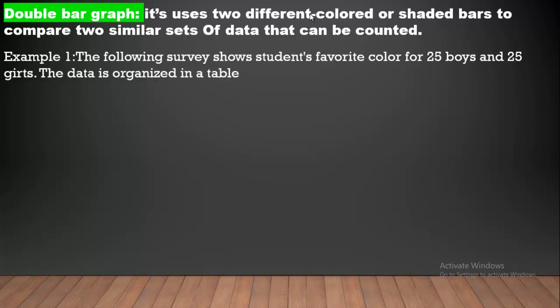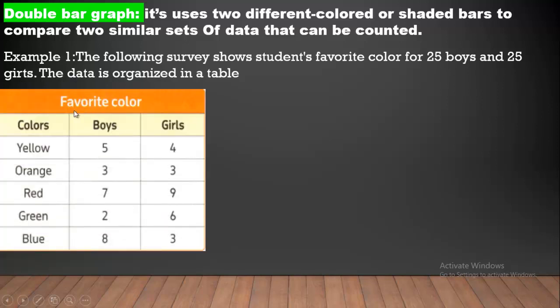Example, the following survey shows the students' favorite color for 25 boys and 25 girls. The data is organized in a table. We have colors yellow, orange, red, green, blue. Boys, yellow 5, girls 4.